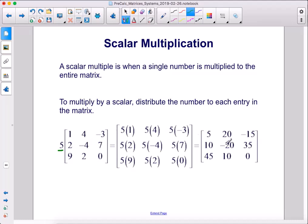Negative 4 times 5 is negative 20, 7 times 5 is 35, 9 times 5 is 45, 2 times 5 is 10, and 0 times 5 is still 0. So here is the matrix we end up with.